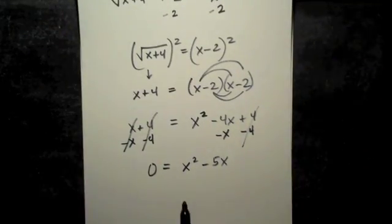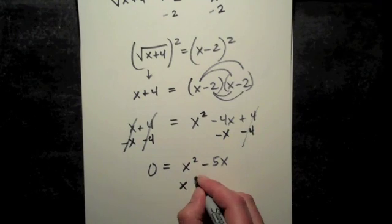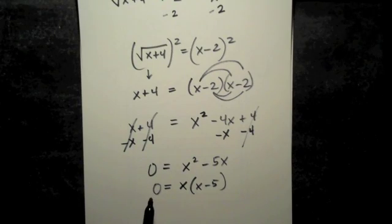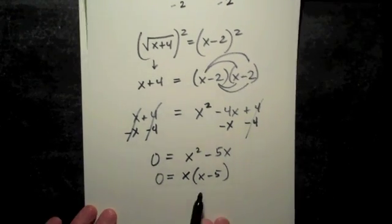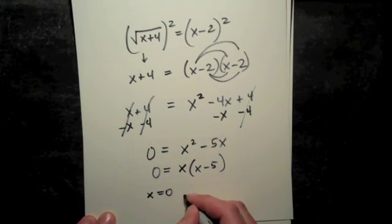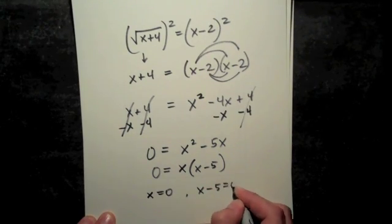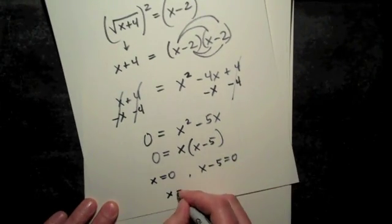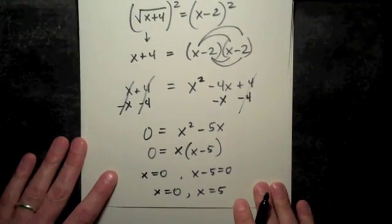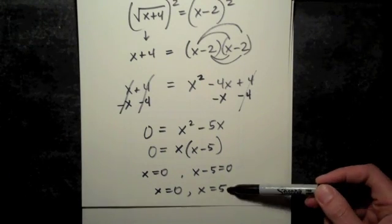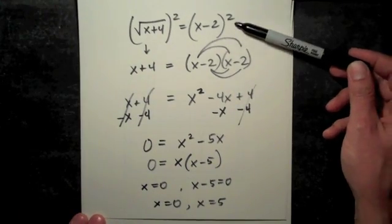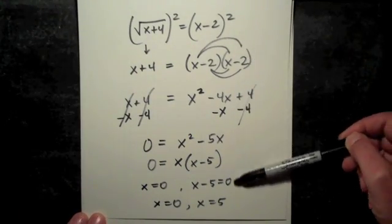X squared minus 5x actually factors very easily. You just factor out an x. It's important that we have the 0 over here on the other side because we're going to use the zero product rule. Either x equals 0 or x minus 5 equals 0. And that gives us x equals 0, x equals 5. Step 3 was a little bit more work this time. After we squared both sides, we had to solve a quadratic equation.